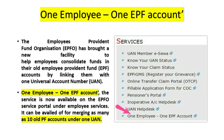One employee, one EPF account. The Employee Provident Fund Organization, EPFO, has brought a new facility to help employees consolidate their funds in their old EPF accounts by linking them with the one Universal Account Number, UAN. The service is now available on the EPFO service portal under employee services, and it can be used for merging as many as 10 old PF accounts under one UAN.